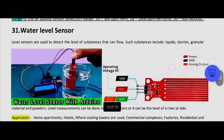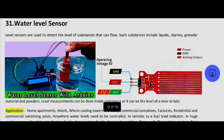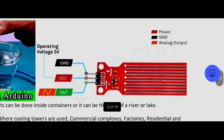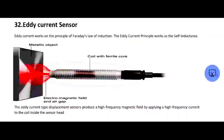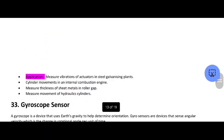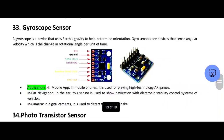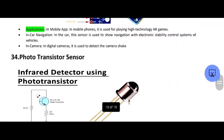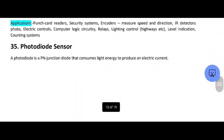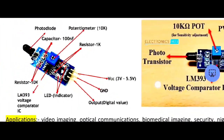Next is the water level sensor. Next one is the gyroscope sensor. Next one is the phototransistor sensor. Next one is the photodiode sensor — here is the photodiode sensor.